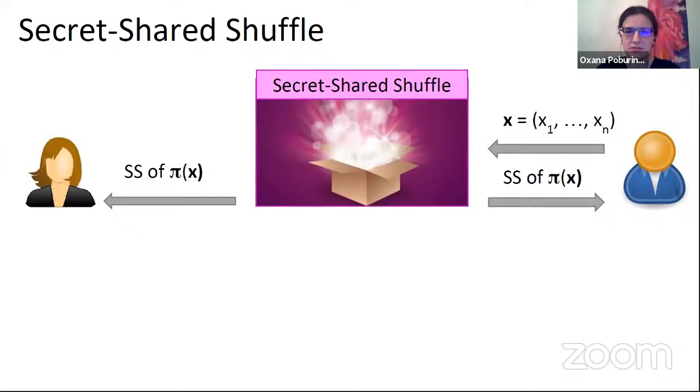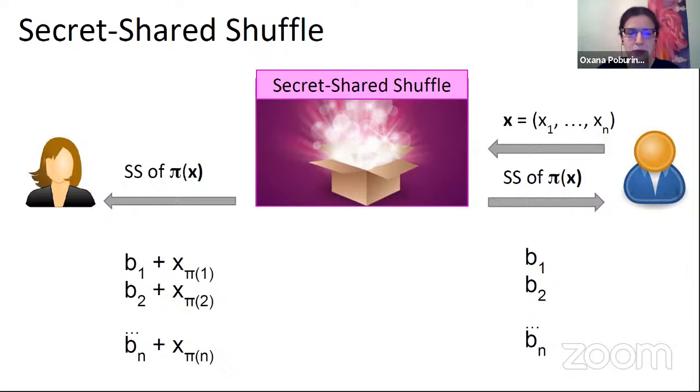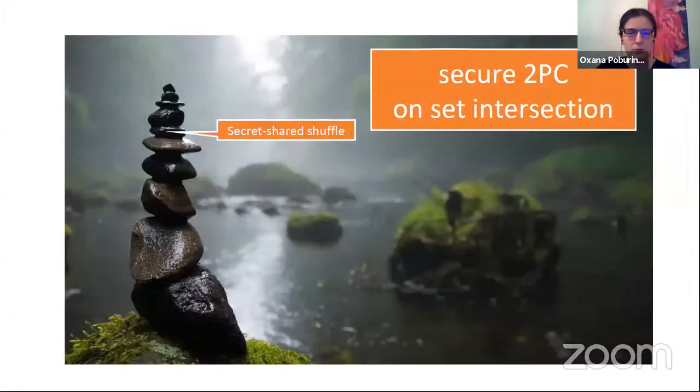Okay. So let me describe what Secret Shared Shuffle is first. So this is a primitive which takes as input a database X consisting of N elements from Bob and this primitive internally secretly shuffles the database and it returns to both parties, the Secret Shares of a permuted database. And this permutation or shuffle has to be hidden from both parties. So more concretely, for instance, if the first share of Bob is B1, then the first share of Alice has to be B1 plus X sub pi 1, which means that these two shares together add up to the element, which is at the position pi 1. This way together, they hold the permuted database.